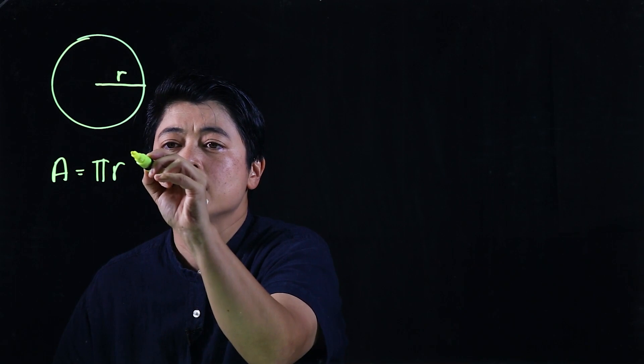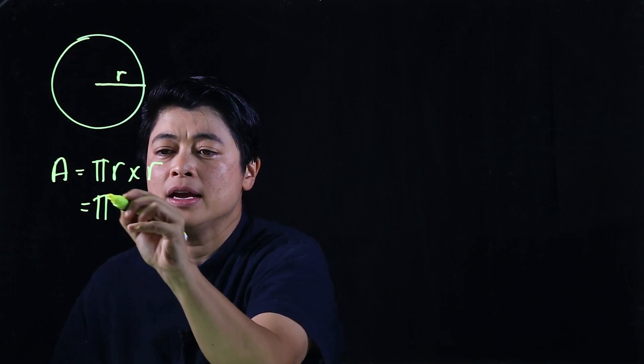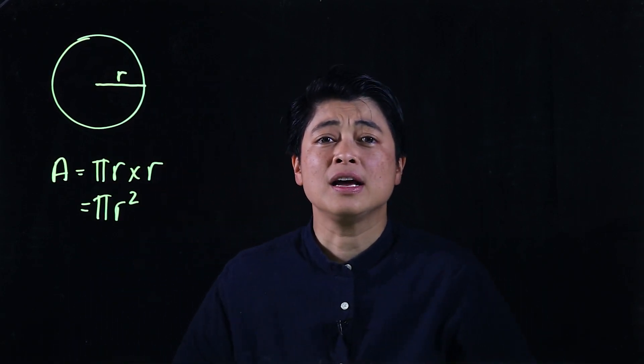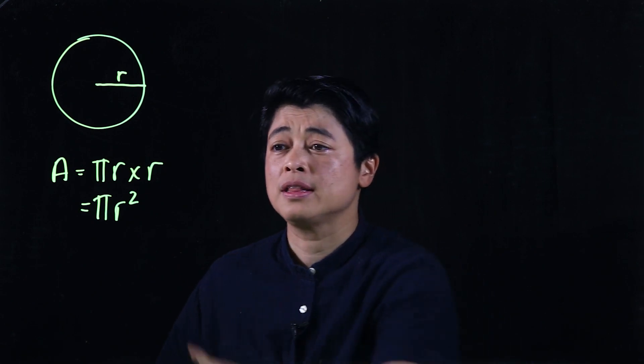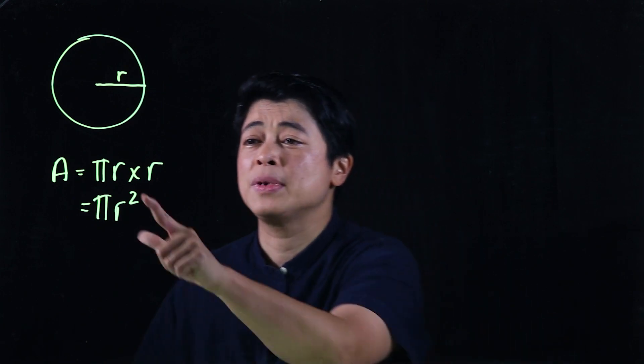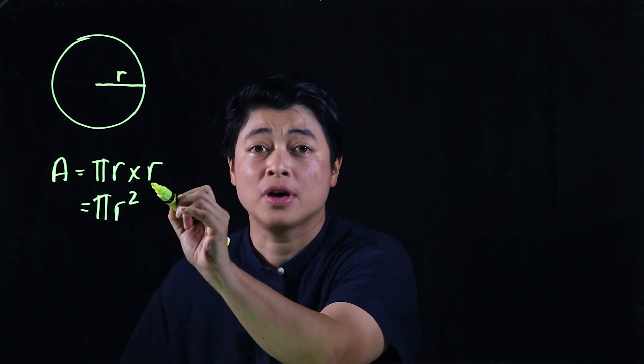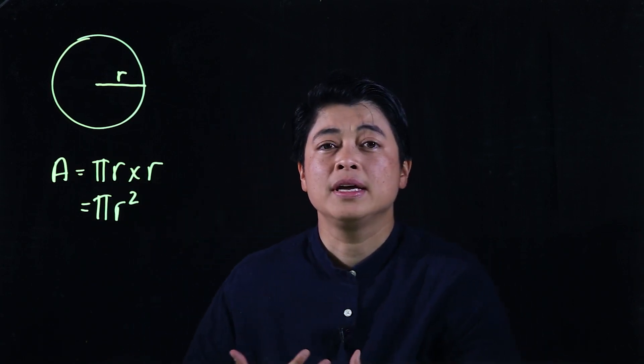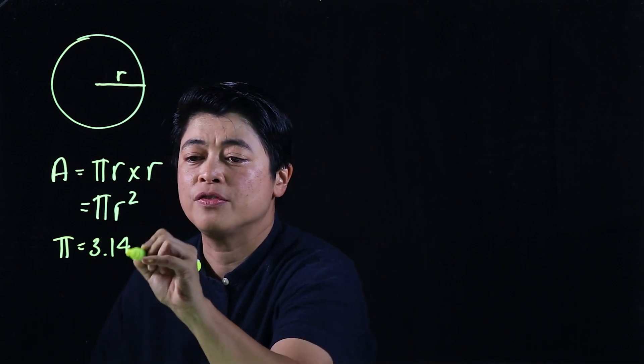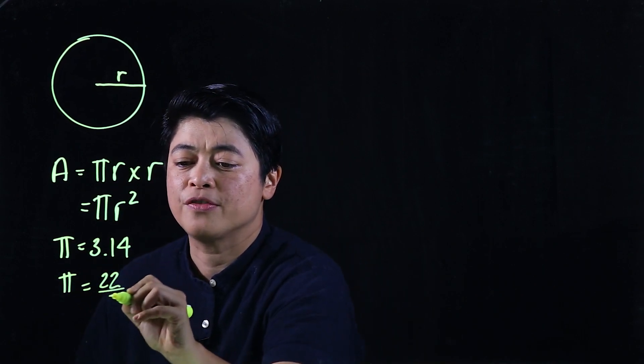pi r times r, which is also written as pi r squared. Now if the kids are allowed to use a calculator then they can use the squared button, but if they're not allowed to use a calculator then it's better to do the pi and then times the r and then times the r. Now from the last lesson we know that pi can be 3.14 or pi can be 22 over 7.